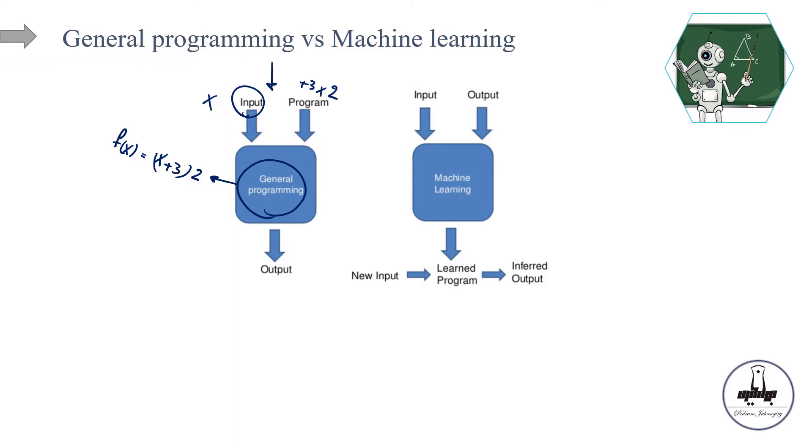Based on that known function, the computer generates output for us. Whatever the input is, the computer takes the input and generates the output—let's call it y. At the end, we know exactly the functional form relationship between x and y because this f(x) is completely known.